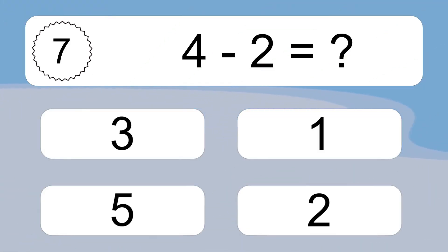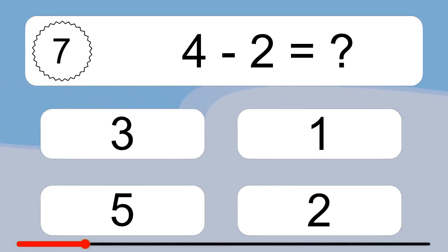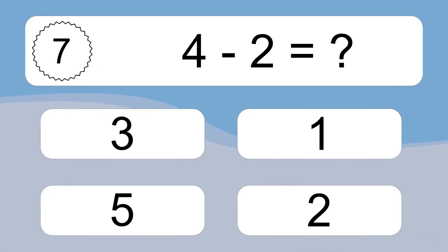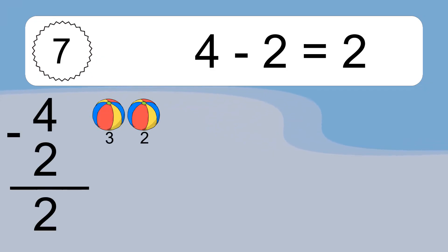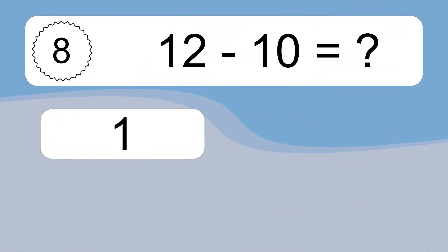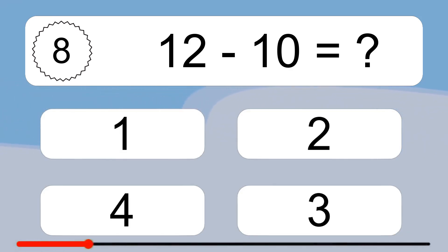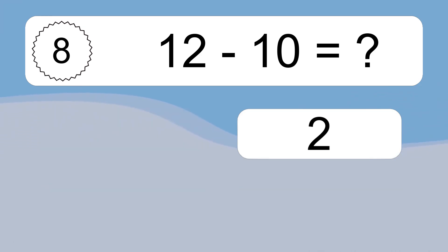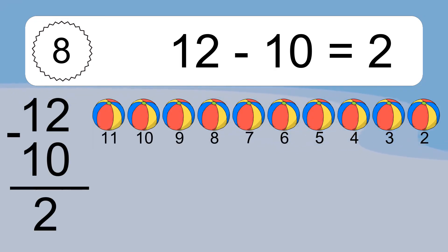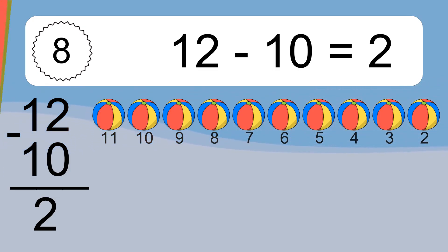4 minus 2 equals what? 4 minus 2 equals 2. Let's count it: 3, 2. 12 minus 10 equals what? 12 minus 10 equals 2. Let's count it: 11, 10, 9, 8, 7, 6, 5, 4, 3, 2.